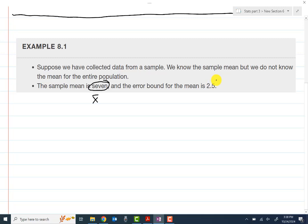The error bound is this guy right here that goes by the letter E. So our confidence interval, then, is x-bar minus E, x-bar plus E, which will be 7 minus 2.5, 7 plus 2.5. So we have 4.5 to 9.5. That's our confidence interval.